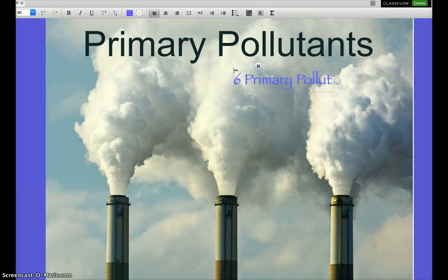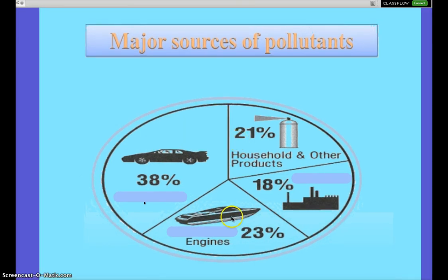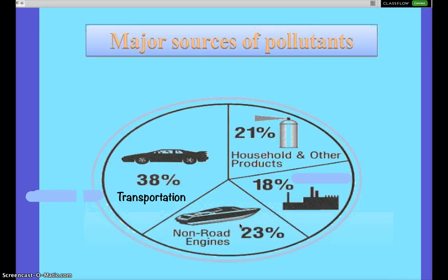Your book only lists five — I'll explain why in a moment. The main sources of all these pollutants: transportation (on-road and off-road) makes up over 60% of all primary pollutants, because automobiles produce every type of primary pollutant. Second is household products, and third is industry. So things like paints, solvents, and cleaners at home, plus manufacturing, all produce pollutants.